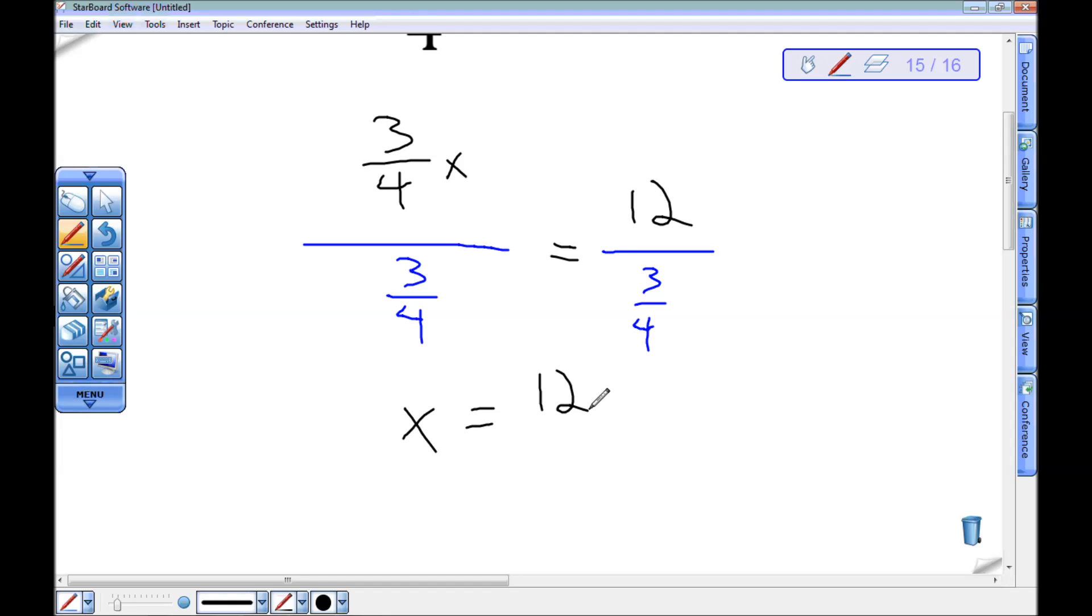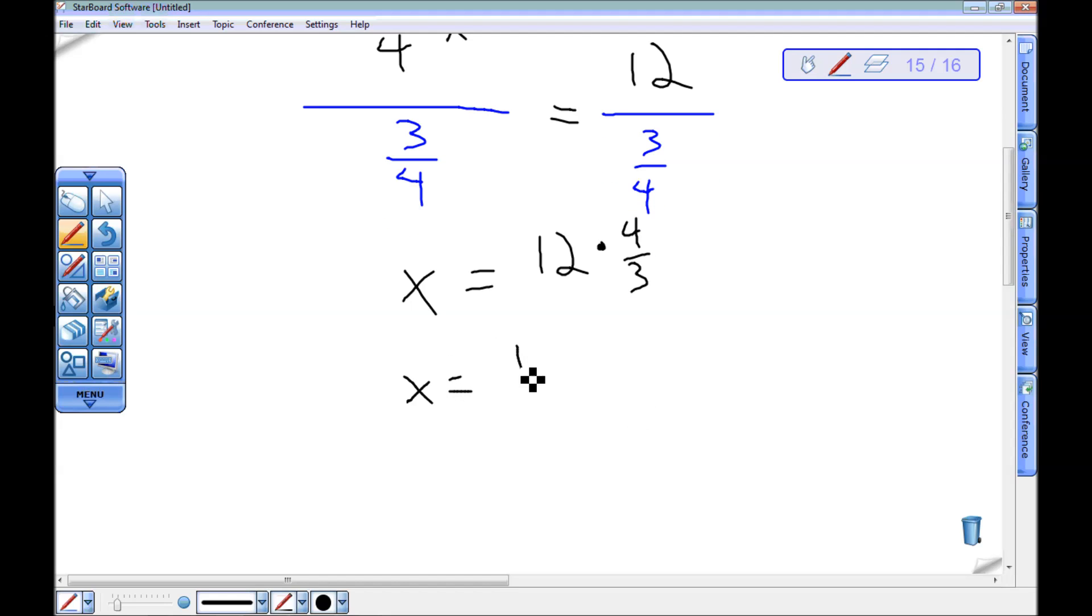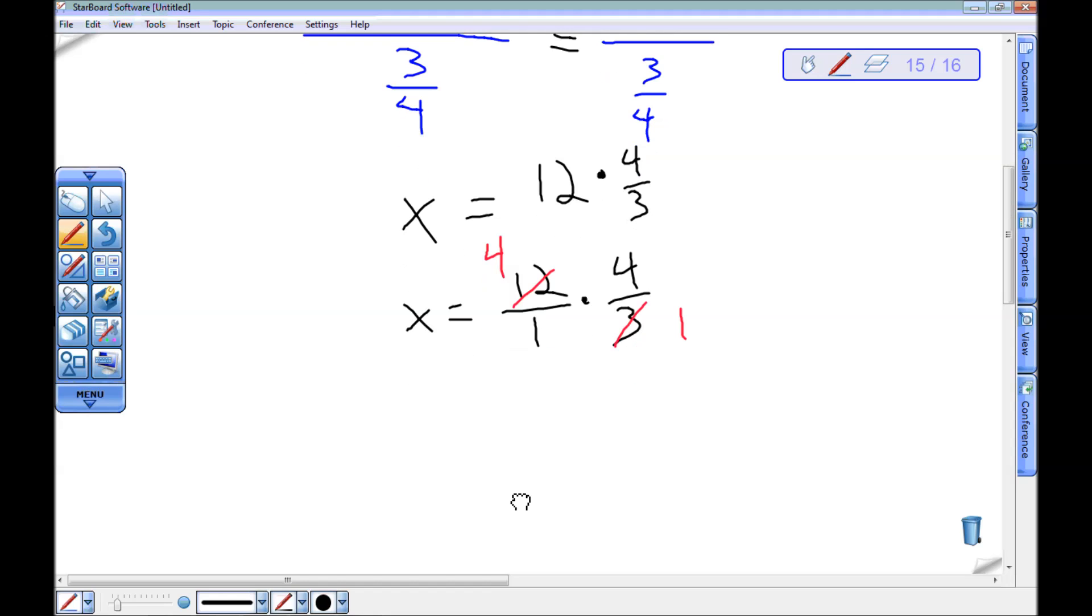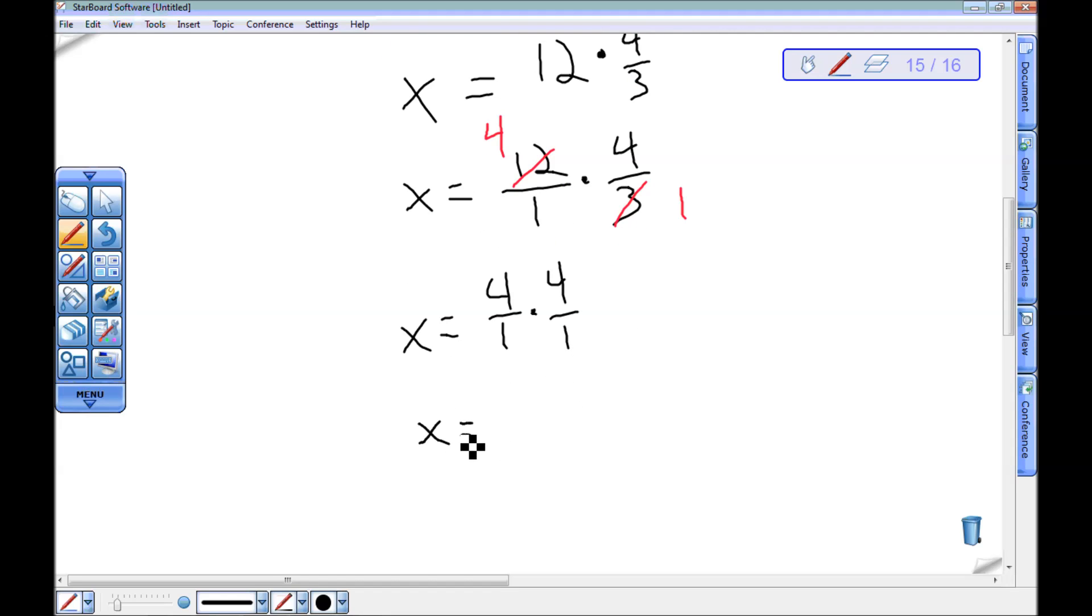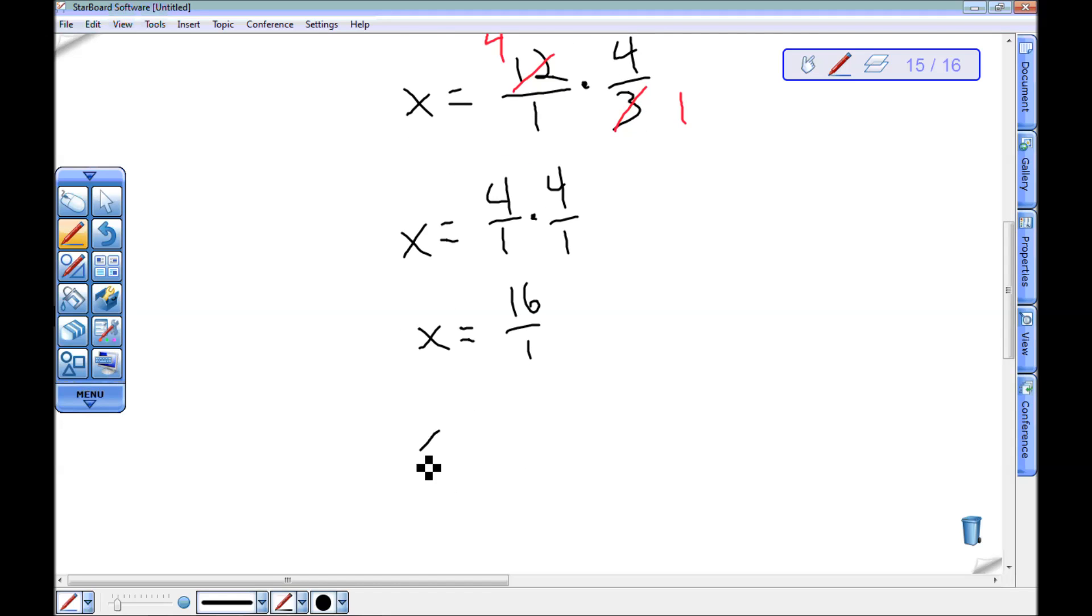Over here, this is 12. Now I need to remember fractions. If I'm dividing by a fraction, I could multiply by the reciprocal. So this is 12 times 4 thirds. Remember this is 12 over 1 times 4 over 3. I have the ability to cancel here. So this is x equals 4 over 1 times 4 over 1, which is x equals 16.